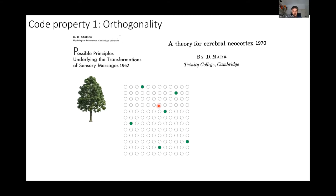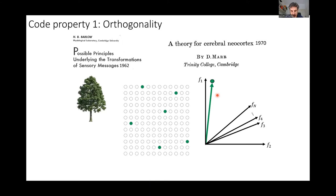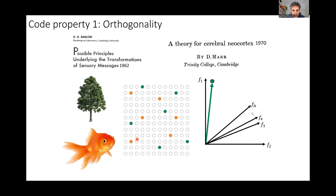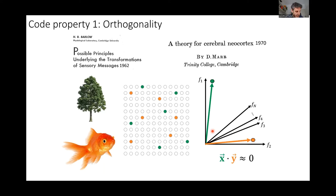What does orthogonality mean? If you've got a particular input causing activity in a set of neurons — where each filled circle represents a firing neuron — this defines a vector in an N-dimensional space. The idea is that if a completely different image comes along, it should activate a completely different set of neurons; in other words, the vectors should be orthogonal — their dot product should be close to zero. Why would you want orthogonality? Barlow's motivation was that this maximizes information transmission measured in bits per spike. If the brain's constraint is energy and spikes cost energy, a sparse code where different stimuli are orthogonal maximizes information per unit energy.